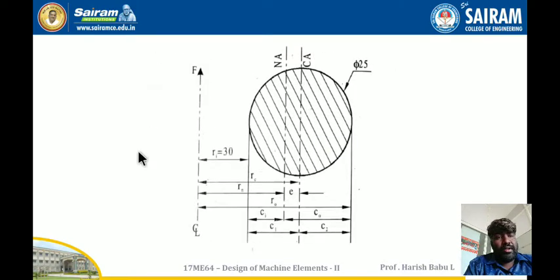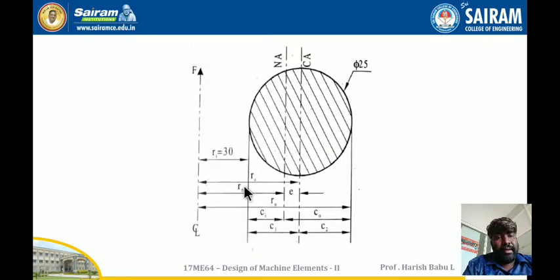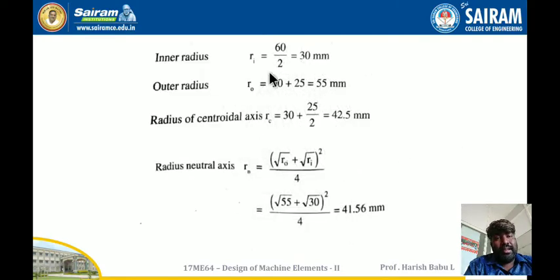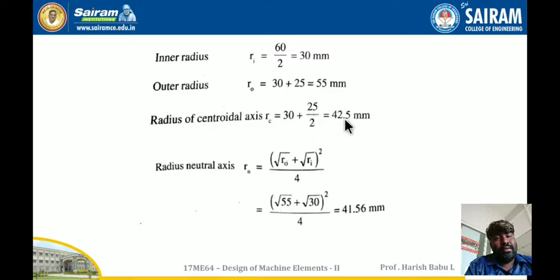Taking the cross-section, RI, RC, and R0 values are calculated. The inner radius RI equals 60 divided by 2, that is 30 mm. The outer radius R0 equals 30 plus 25, that is 55 mm. The radius of the centroidal axis RC equals 30 plus 25 divided by 2, which gives 42.5 mm.